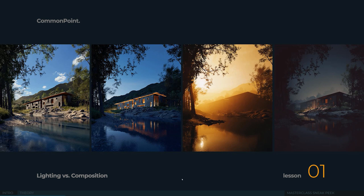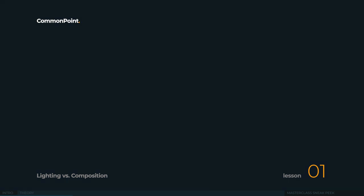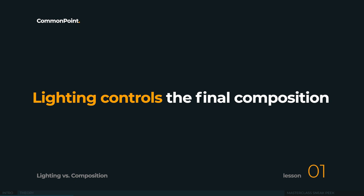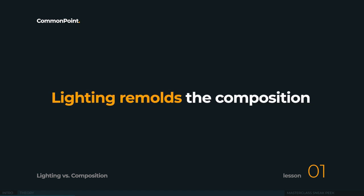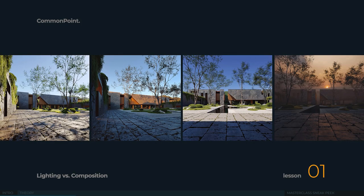We have a couple of images here and each one of them is about something different. The first image is about the architecture, pretty standard. The second one is about the interior and the living space. The third one gets interesting because it's about the shape mostly — the silhouette and the colors. While the last one is a little funky — it's about this particular room and what's happening inside. What you should take away is that those images are not only about different lighting setups, they have become different compositions as well. Lighting is a part of composition and makes it complete. It can decide what's important about the image and make it really shine. It can remold what the composition and the scene is all about.